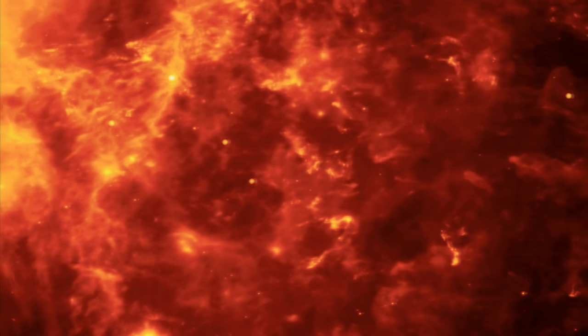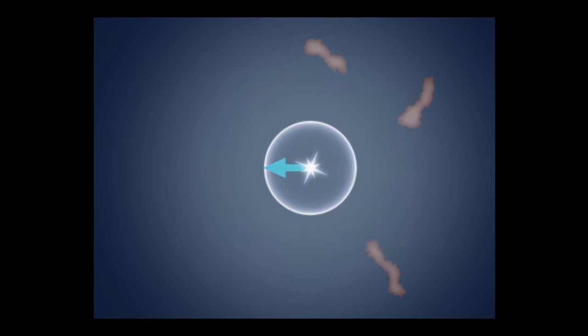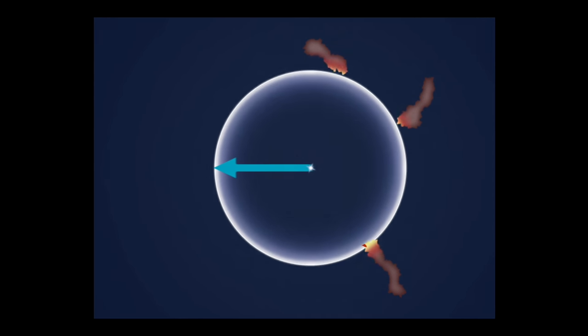These are light echoes, just like what we saw with the star Montessoritos. The light from a supernova can take hundreds of years to reach surrounding dust clouds.